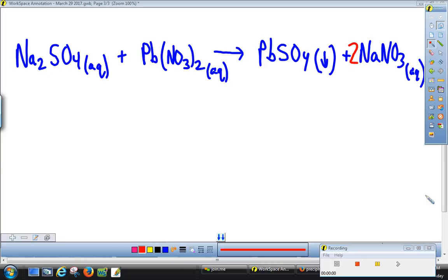Hello, class. It's Mr. Lehman. I'm back. I'm going to continue on here. So what we did in the last tutorial is we wrote the double replacement reaction for sodium sulfate and lead nitrate, lead 2 nitrate, and we determined that we made a precipitate lead sulfate and we made aqueous sodium nitrate.